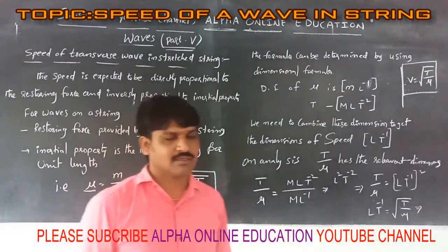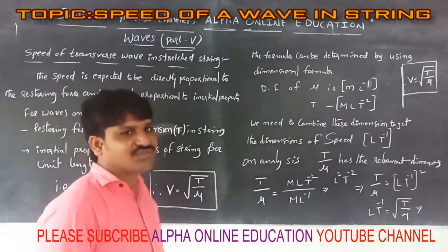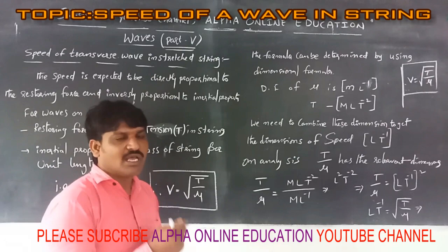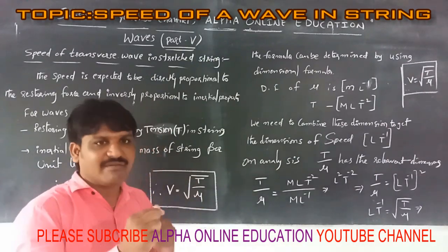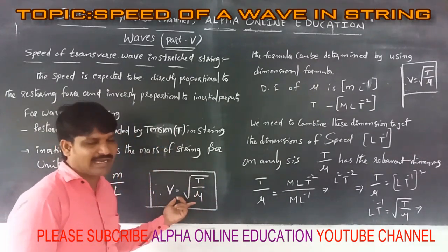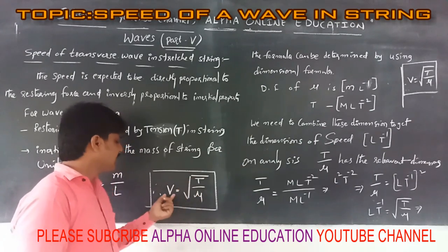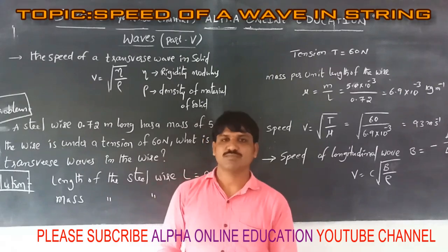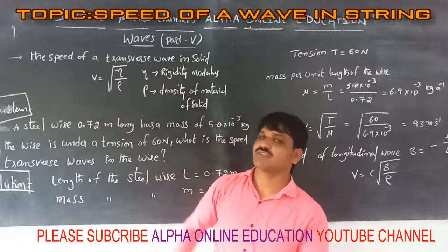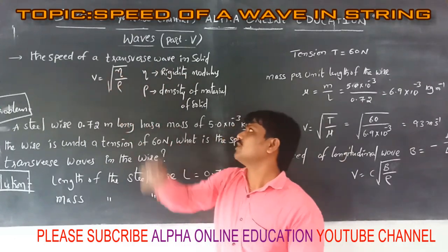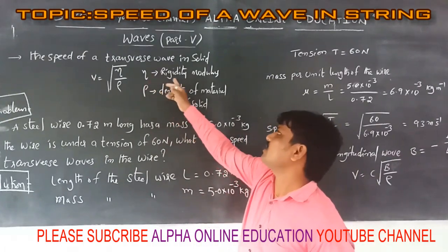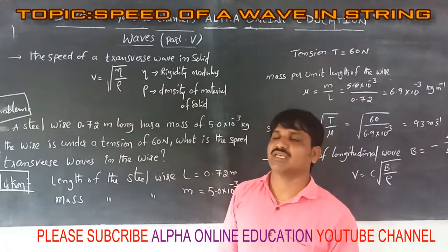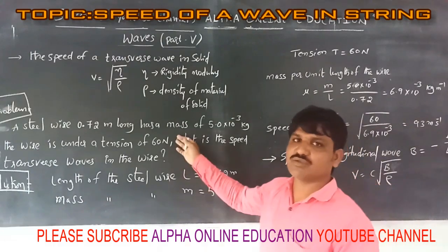For the speed of transverse waves in a stretched string or any material medium that has tension and an inertial property, we apply the formula V equals root of T divided by mu. Additionally, by using dimensional analysis, we can find the speed of transverse waves in a solid: V equals root of eta divided by rho, where eta is the rigidity modulus and rho is the density of the material of the solid.